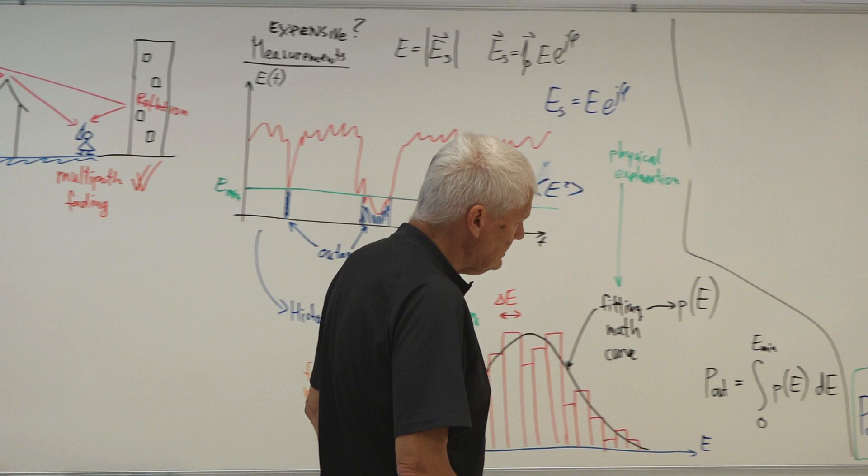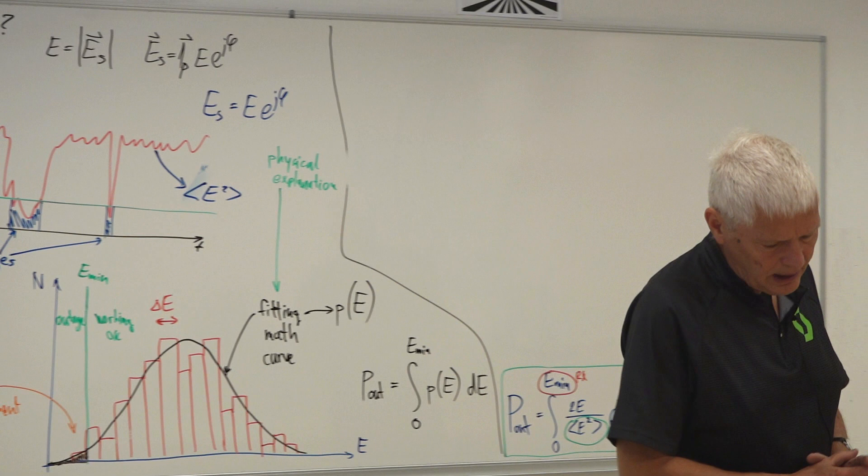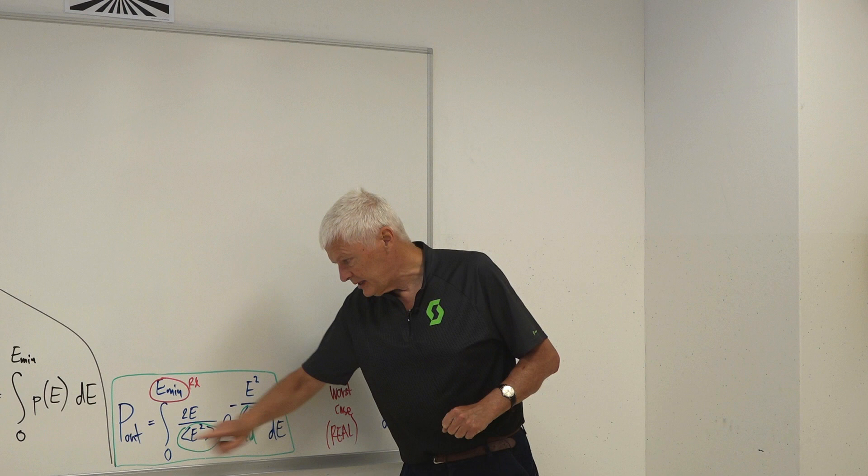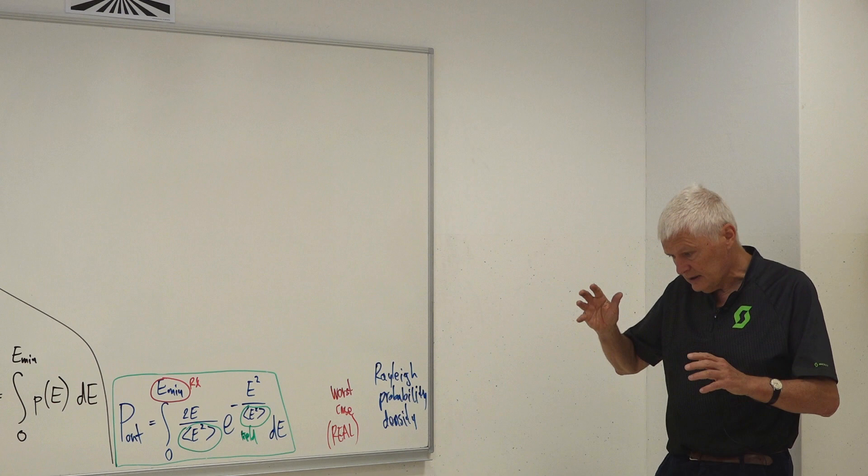Last hour I said that the Rayleigh distribution is actually a real problem — it really happens. What we are not happy about is that it's actually the worst case. It gives us the worst possible results, the highest possible probability of an outage. I will draw the details of these distributions later to see what is actually going on.